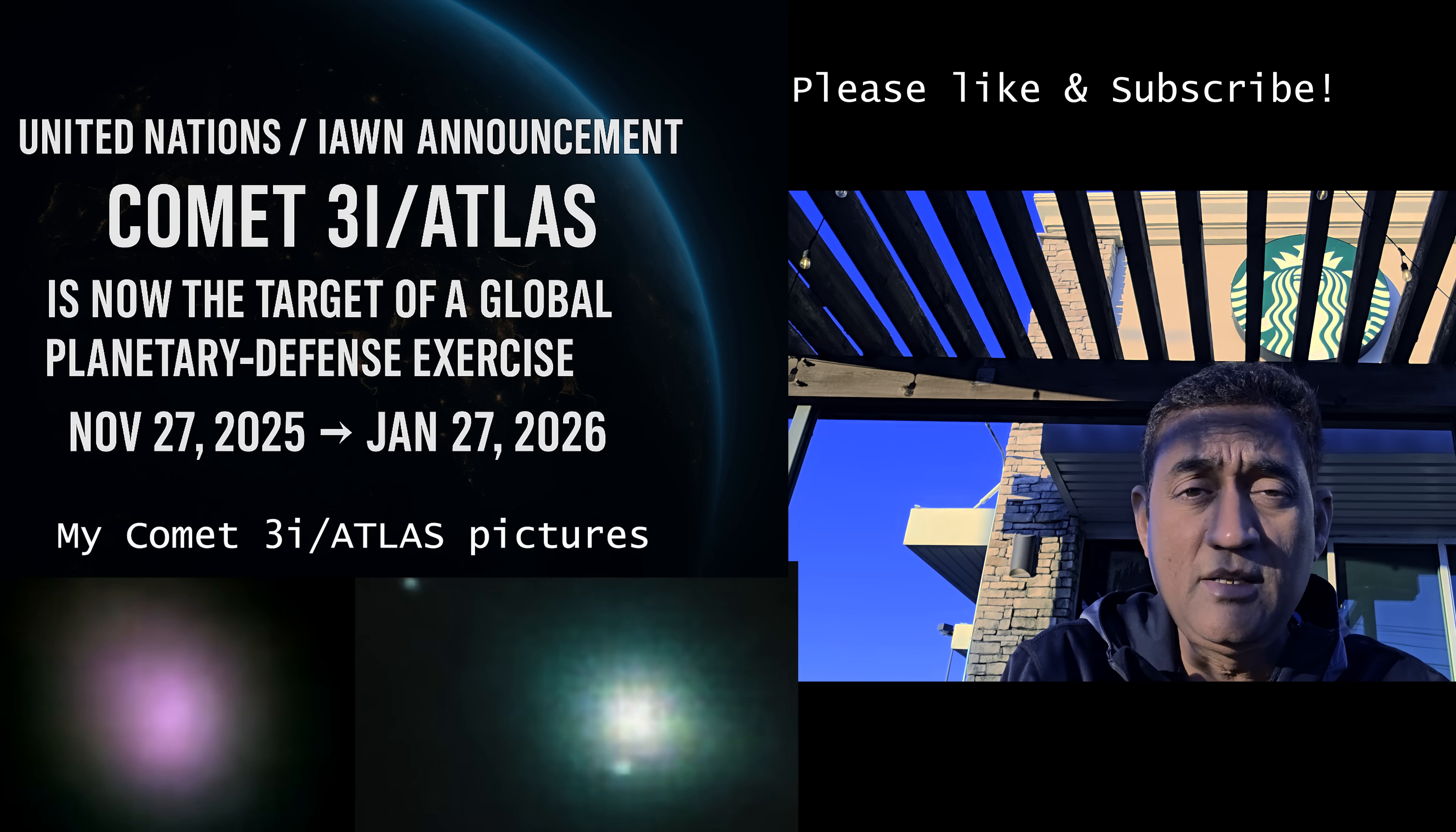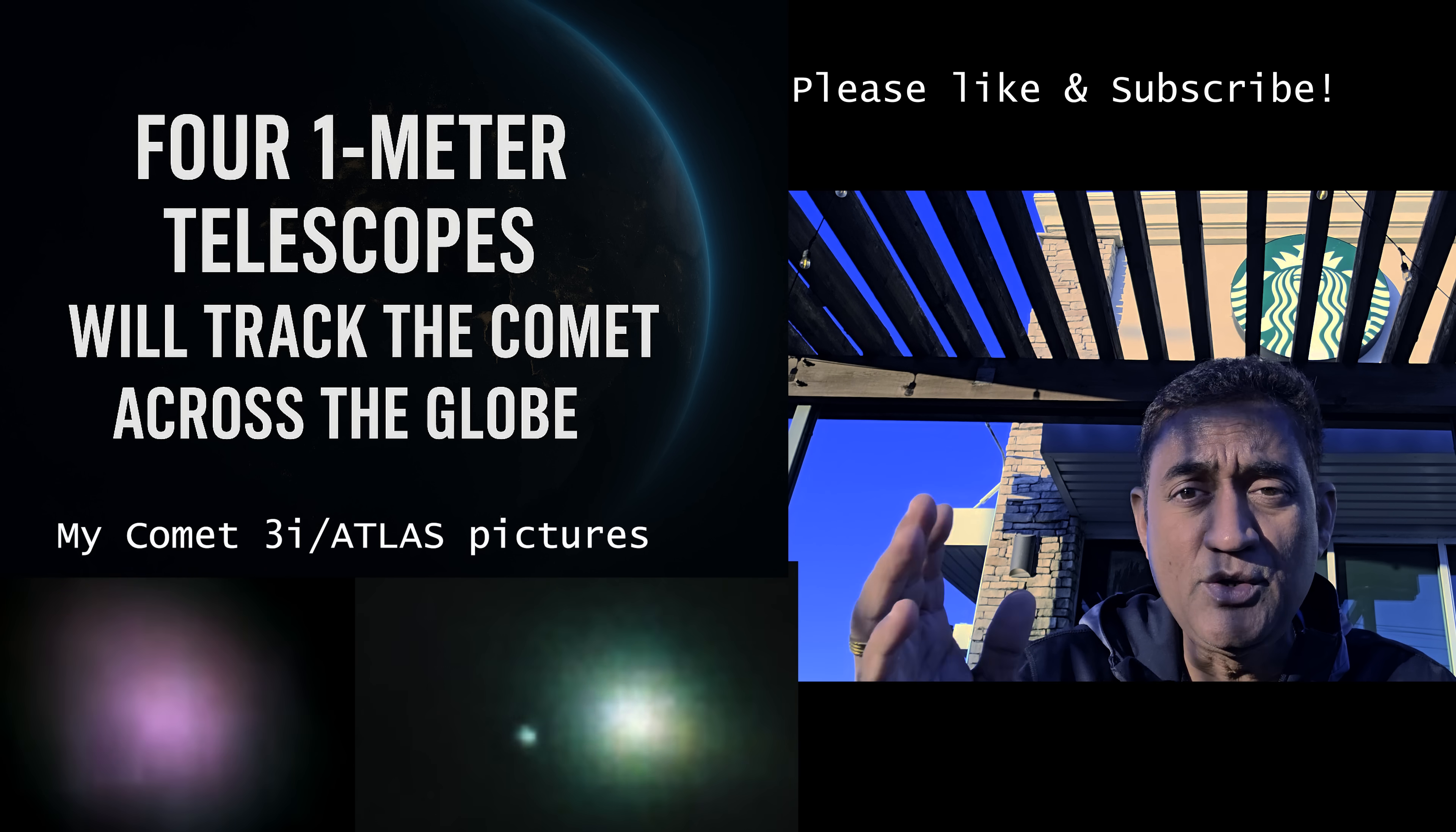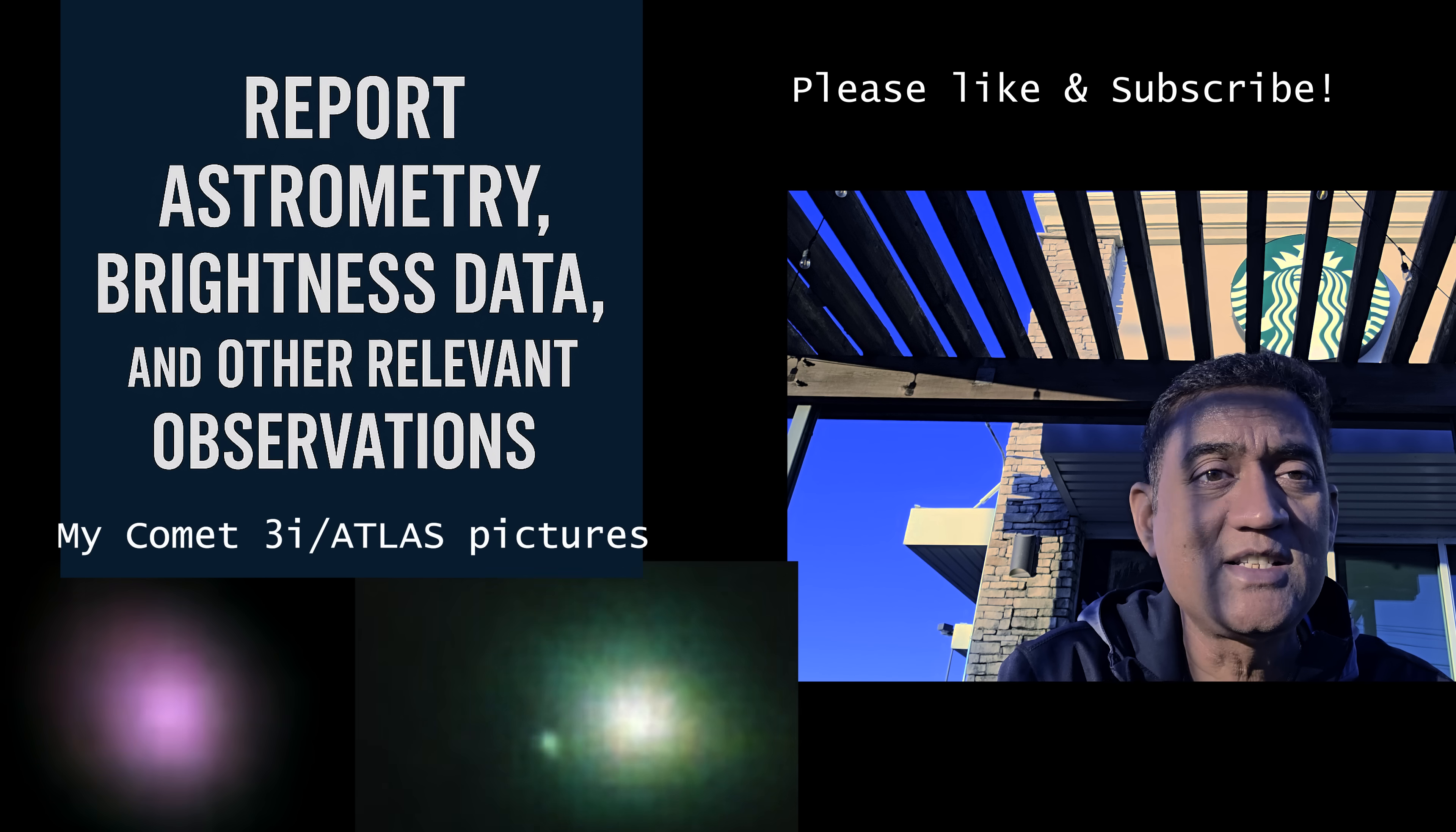So they are going to collect the astrometry, meaning the location, the axis, where it is. Exact position, that's what the astrometry is going to tell, where the comet is. They will also find the light curve, the brightness, the fluctuations in the brightness, the coma size, the orientation if it is moving, the tail, the structure of the tail, the changes, the rotation signatures. Interesting that they wanted to look at the rotation now.